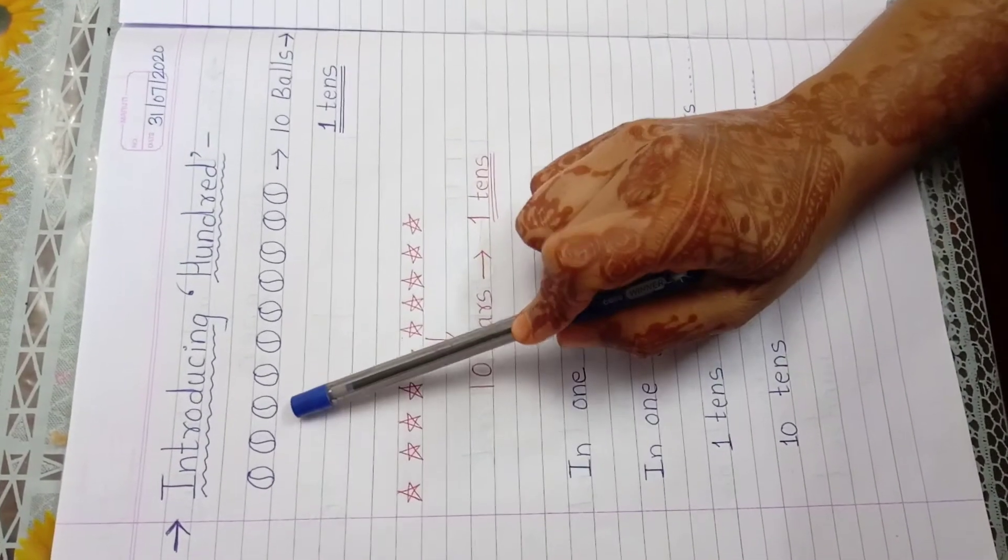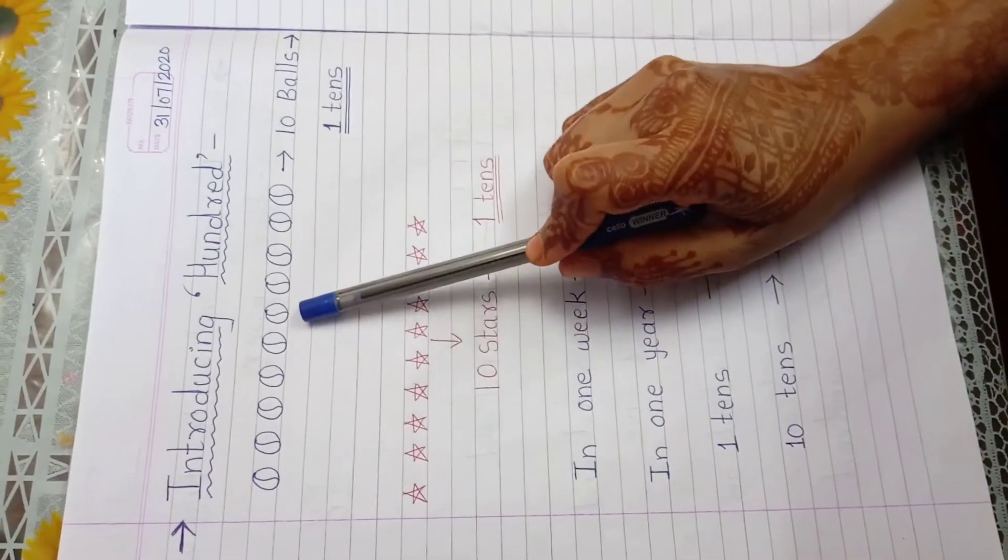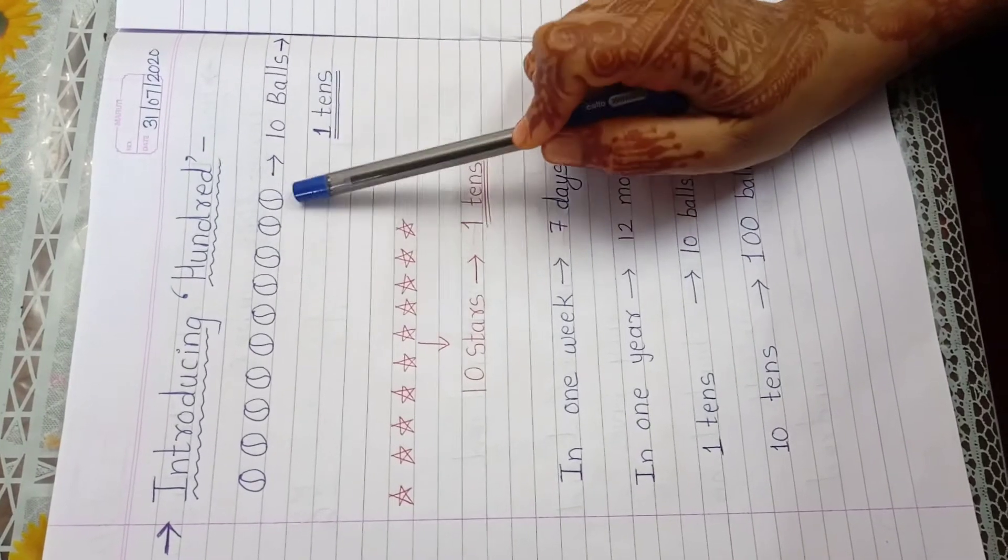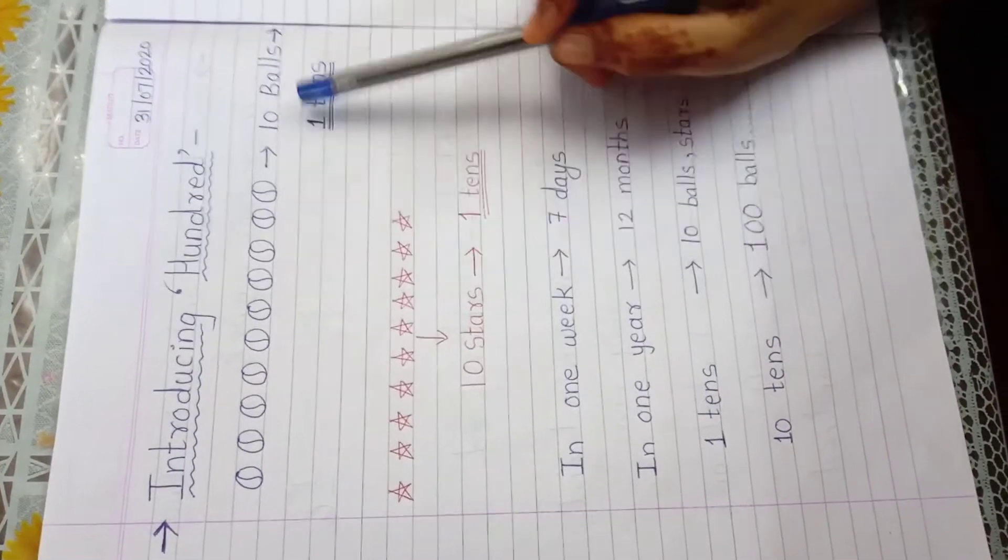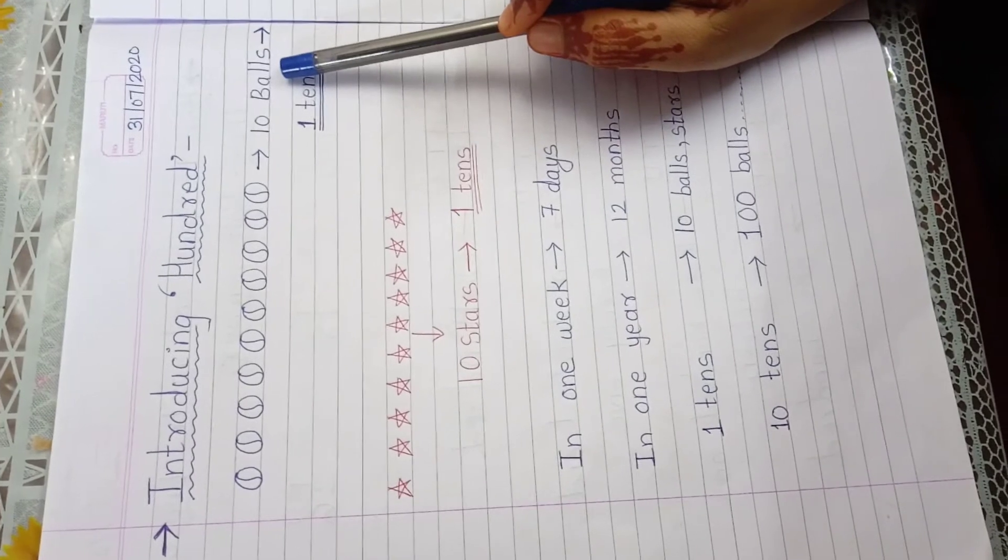1, 2, 3, 4, 5, 6, 7, 8, 9 and 10. How many balls? 10 balls. How many balls? 10 balls.